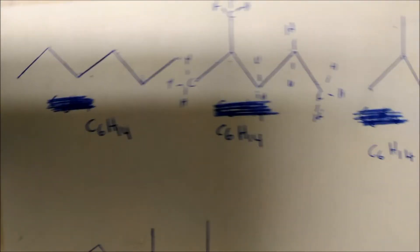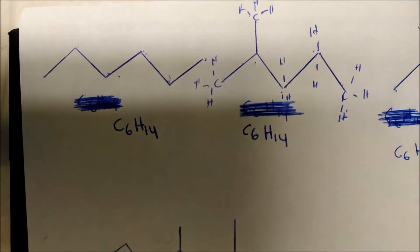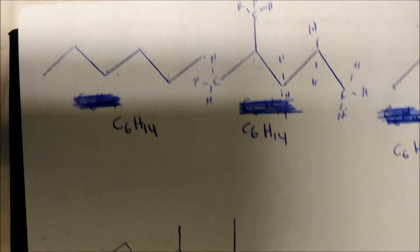These compounds have the same molecular formula but different atom connectivity, so these are what we call constitutional isomers. Let's look at a more difficult one to see if we can come up with a molecular formula.